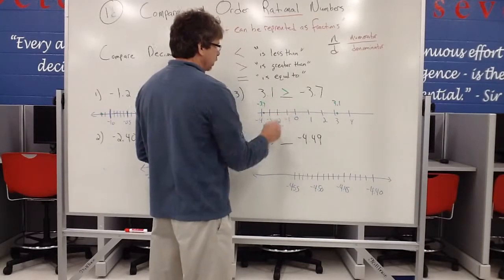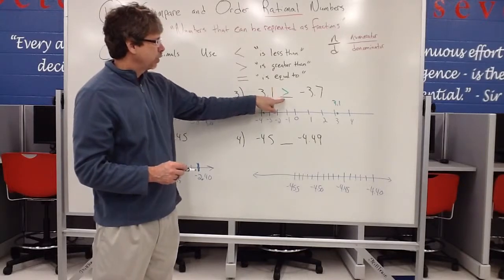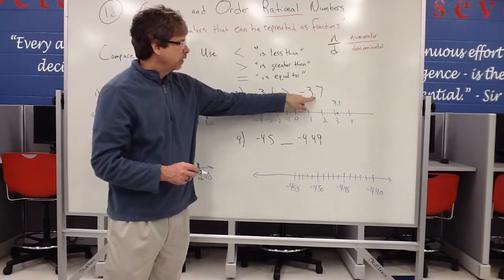So this is going to be a greater than symbol. So that's going to be 3 and 1 tenth is greater than negative 3 and 7 tenths.